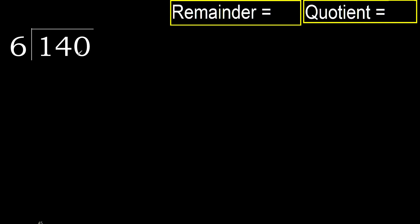140 divided by 6. 1 is less, therefore next. 14 is not less, therefore work with 14. 6 multiplied by which number is nearest to 14, but not greater?